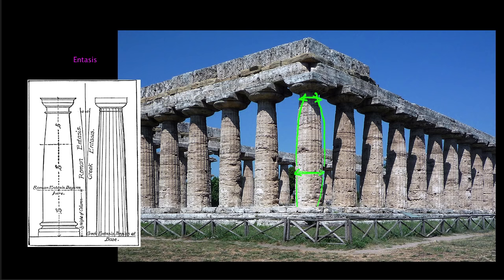The building has a sense of liveliness it wouldn't have if the column were exactly the same width top to bottom. Architectural historians have debated why the Greeks bothered, because this was expensive and difficult — it meant every drum making up the column had to be an individual unique piece; these could not be mass-produced. The columns are not carved from one piece of stone; if you look carefully you can make out the seams between the drums. A piece of wood would often string them together through a central hole, almost like beads on a necklace.